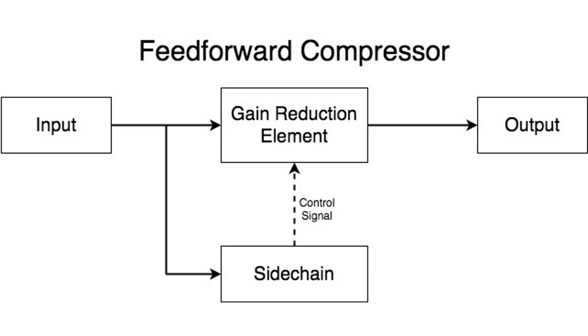Feed forward compression feeds the audio signal into the side chain before the gain reduction element. This compressor type anticipates the signal amplitude and adjusts the side chain signal in advance. An ideal compressor should not affect the audio whatsoever except for a defined amount of gain reduction when the signal in the side chain surpasses the threshold. In that scenario, feedback and feed forward compressors would act exactly the same below the threshold — but that's not the case. The circuit itself will cause inherent coloration of the signal even with no gain reduction.